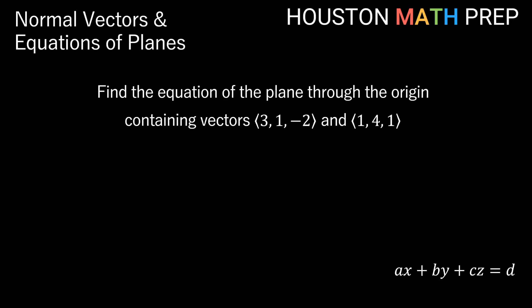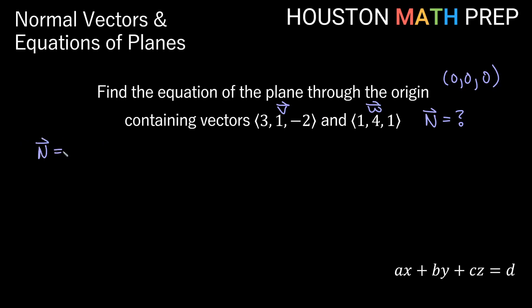Let's look at another example: find the equation of the plane through the origin containing vectors v = (3, 1, -2) and w = (1, 4, 1). The plane contains the origin, so we have the point (0, 0, 0). What we don't have is a normal vector. We have two vectors in the plane, but the normal vector sticks straight out of it. To find a normal vector when we have two vectors in the plane, we need to take their cross product.